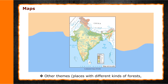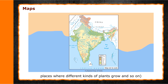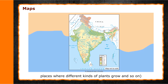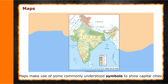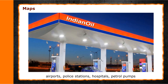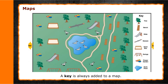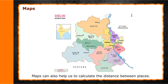Maps can also show other themes such as places with different kinds of forests and places where different kinds of plants grow. Maps make use of commonly understood symbols to show capital cities, airports, police stations, hospitals, petrol pumps, or other places and things. A key is always added to a map — it explains what the symbols stand for. Maps can also help us calculate distance between places and help us locate places easily.